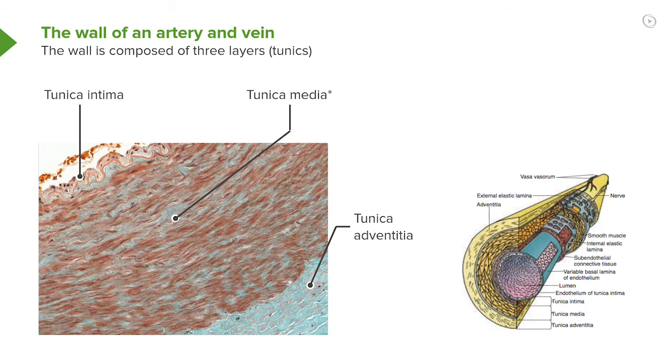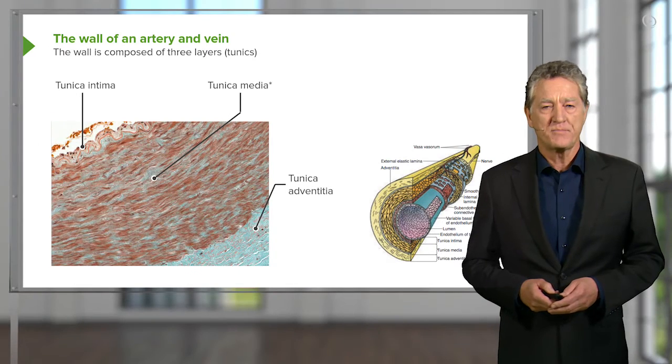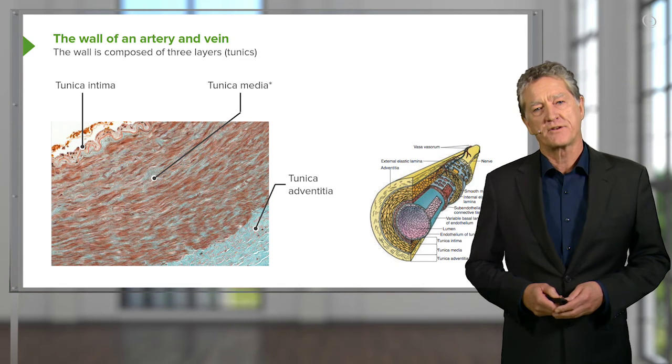On the outside, the third layer is the tunica adventitia. It's connective tissue. Here it's fairly dense connective tissue, mostly collagen. That's an important layer for a number of reasons. Most importantly, it strengthens the wall of the artery.